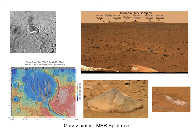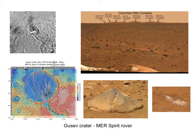Spirit rover was directed toward Gusev Crater because they thought that in the past, Gusev Crater had been filled with a lake. What kind of rocks would you expect on the bottom of a lake? Sedimentary. They sent Spirit specifically to find sedimentary rocks that might have fossil evidence or at least a record of what conditions were like when those rocks were laid down. But when they got there, the whole basin had been covered over by lava flows long after the sediments would have been deposited on that lake bottom — a bit of a disappointment.